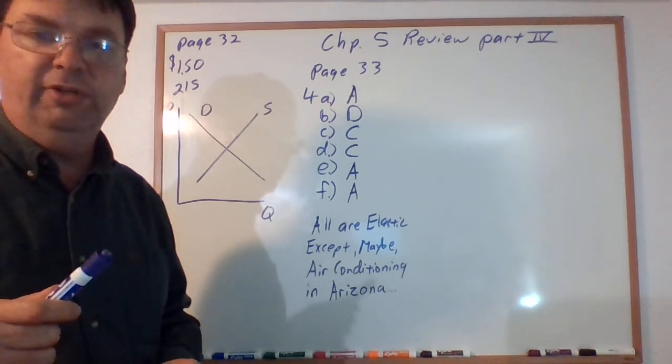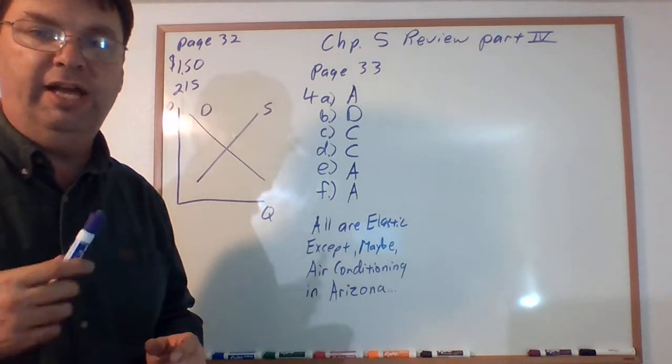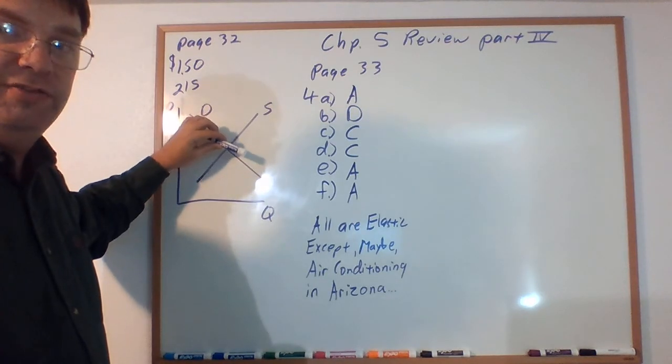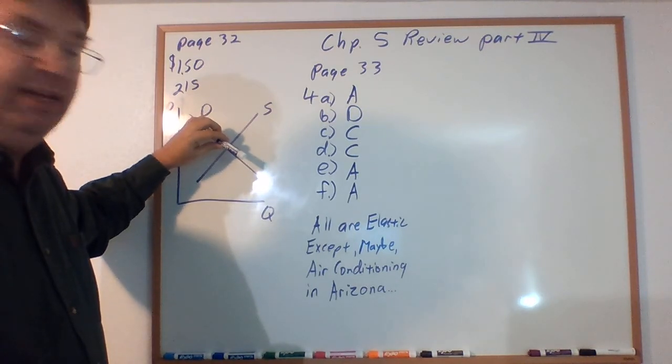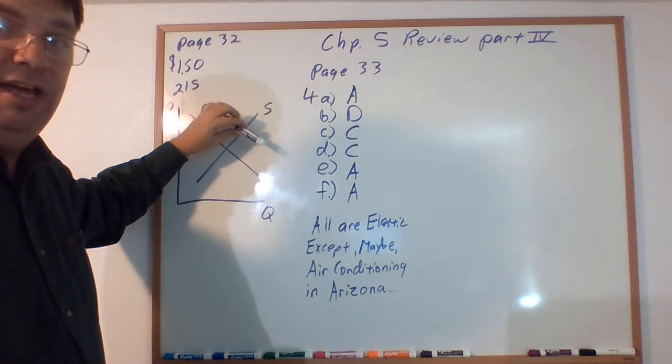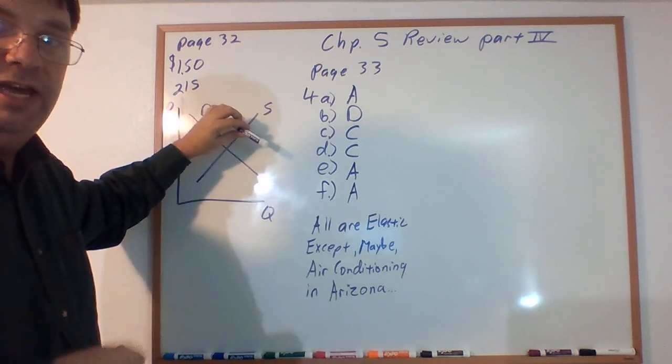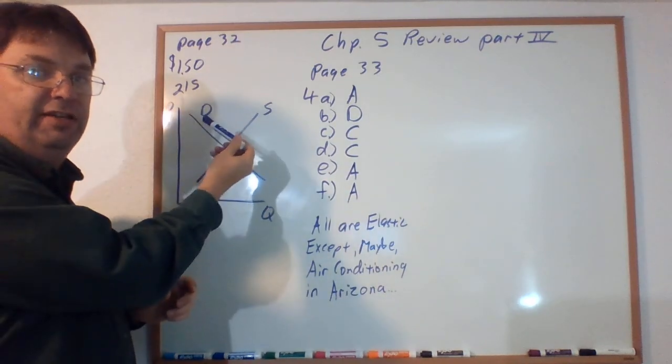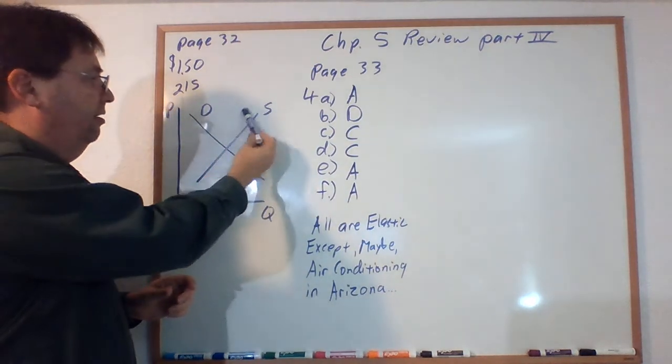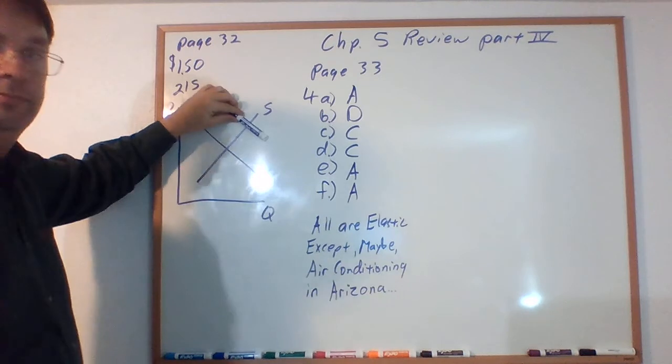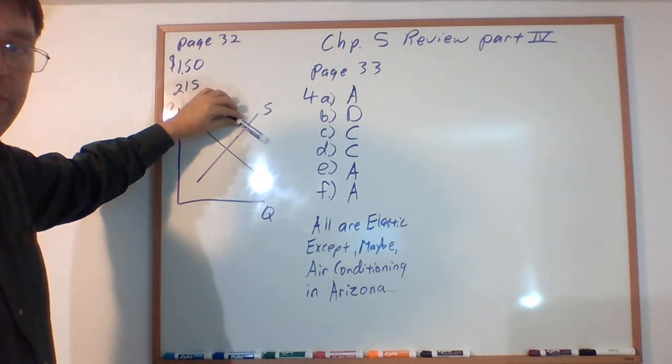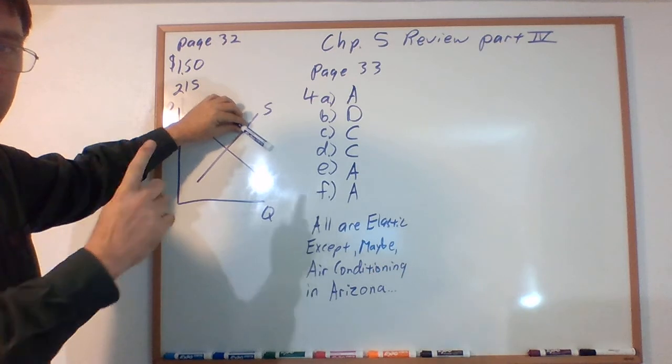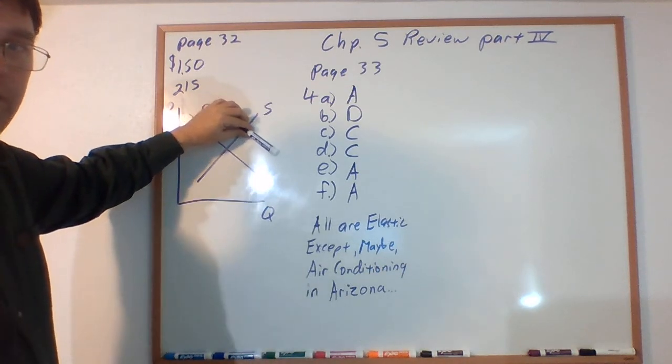If it could protect you from the common cold, people would want more at each and every price. So you've got your demand curve here, and it's going to shift outward. At each and every price you're going to have a new demand curve laying down on there like this. What happened to price? It went up. What happened to quantity? It also went up. So your new equilibrium price—people will want more at each and every price because that's a shift in the demand curve.